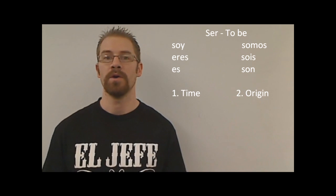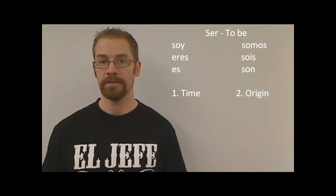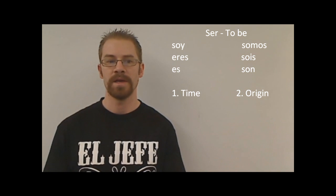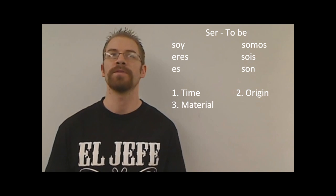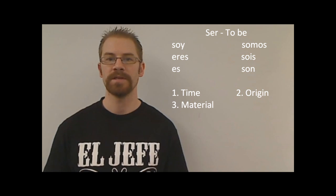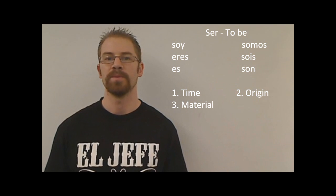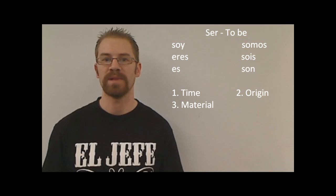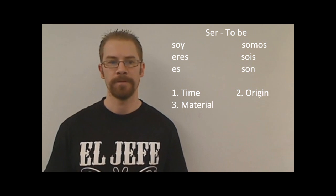Dos: origin — where people are from. Yo soy de California. ¿De dónde eres? Where are you from? So for where people are from, use ser. Next: material — what things are made of. La botella es de plástico — the bottle is made of plastic. What things are made of: ser.